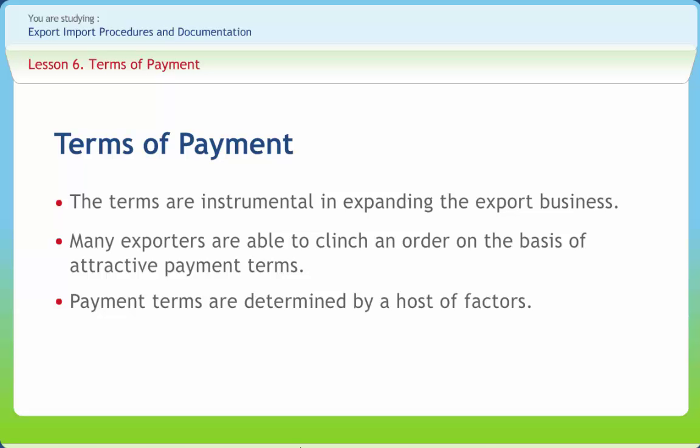There are four methods of receiving payments from overseas buyers. These methods carry risks of varying nature. Hence, the choice depends largely on the bargaining strength of the trading partners.